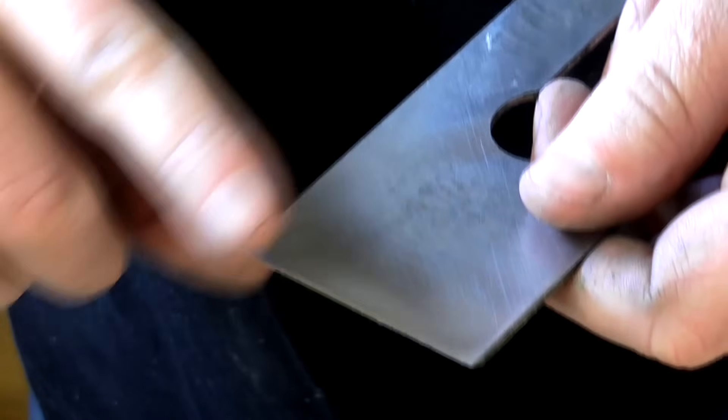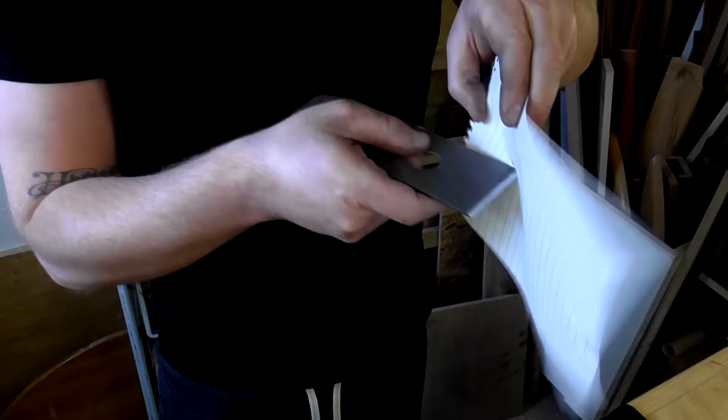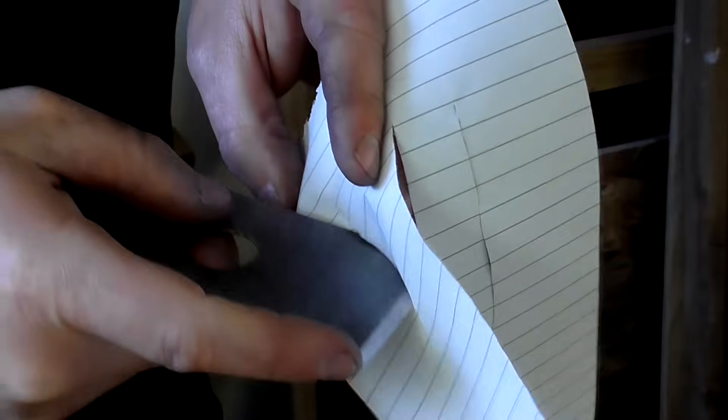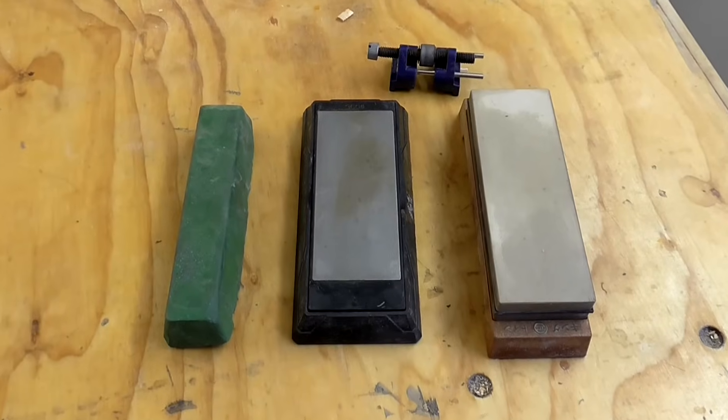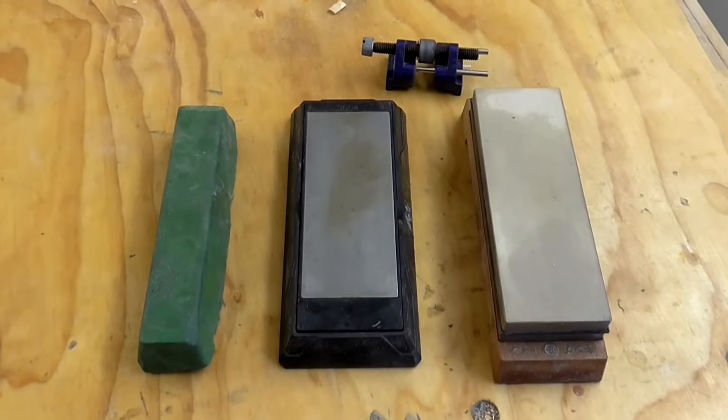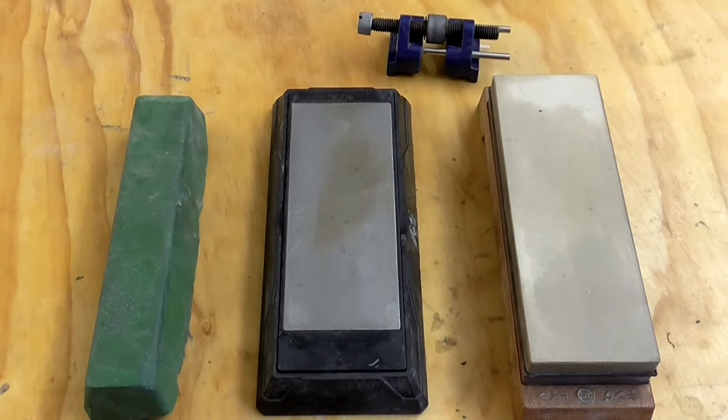By this point I can feel a burr along the cutting edge which I remove on the strop. I test it's sharp using a piece of paper and when it cuts cleanly I know I've got a good cutting edge. I'll include links to all the products I use for sharpening in the description box below this video if you are interested in any of them. All of the products I use are relatively inexpensive.